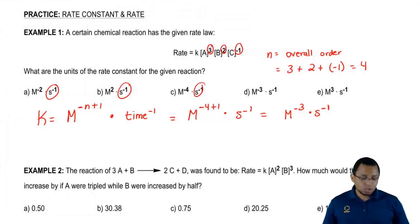Here, the correct answer would be M to the negative 3 times seconds to the negative 1. The correct answer would be D.